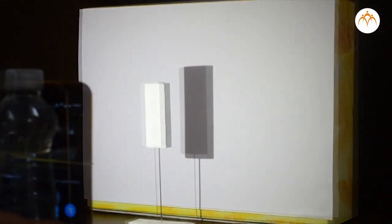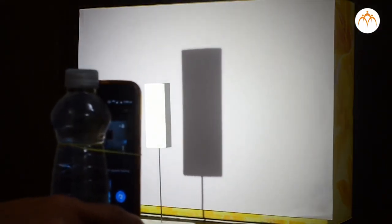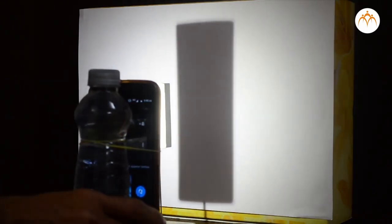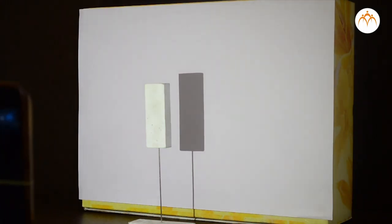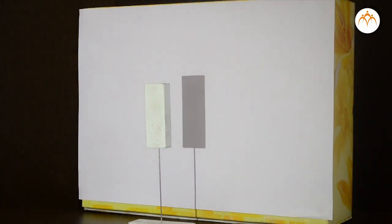I can see the shadow of the eraser on the box. Shape of the shadow is same as that of eraser. Size of the shadow changes. It becomes larger when I move the torch near the eraser.